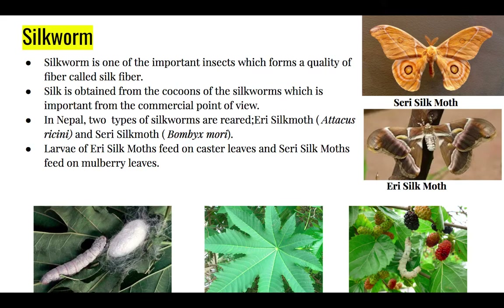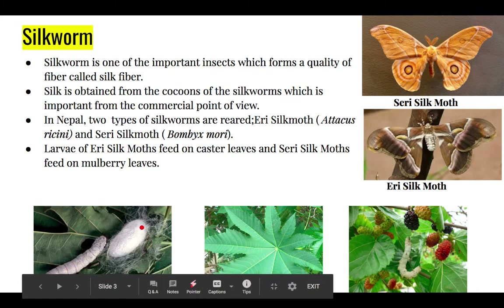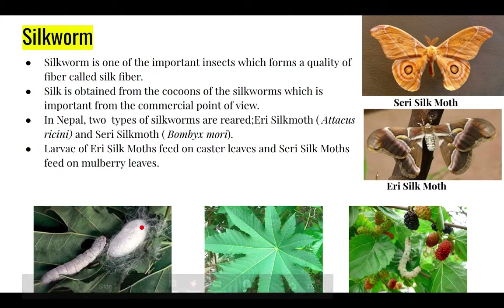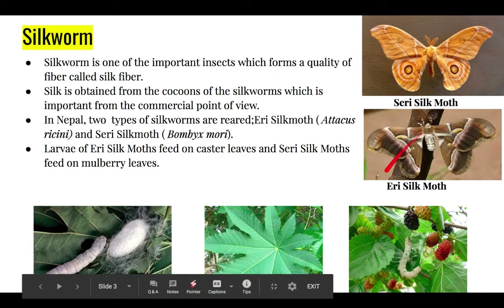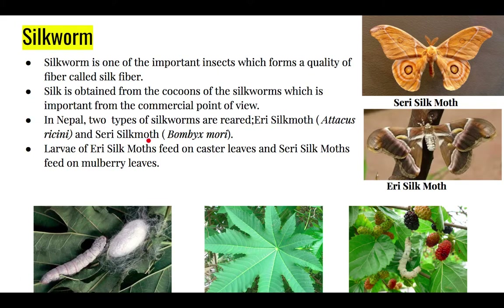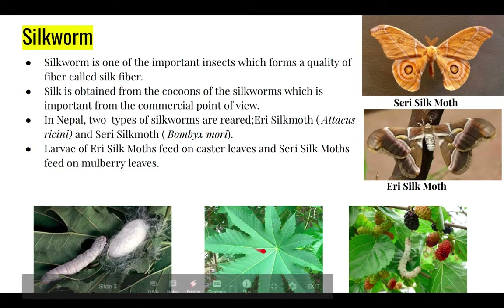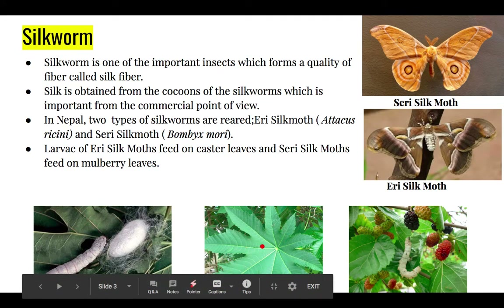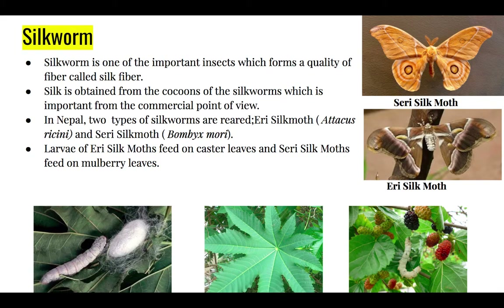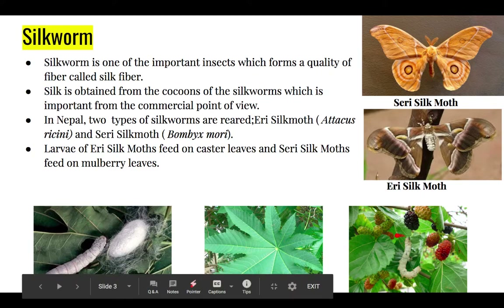Silkworm helps to produce one of the best natural fibers — silk fiber — and that is why it has great importance. The silk fiber can be obtained from cocoons, and you can see the cocoons here. In Nepal we have two types of silk moth: one is the Seri silk moth and the other is the Eri silk moth. Eri silk moth's scientific name is Attacus ricini, and Seri silk moth's scientific name is Bombyx mori. Eri silk moth feeds on castor leaves — a plant whose seeds can produce oil — and Seri silk moth feeds on mulberry leaves.